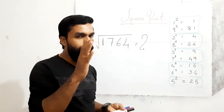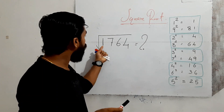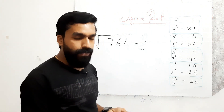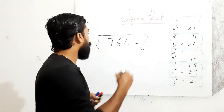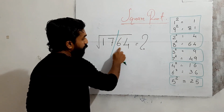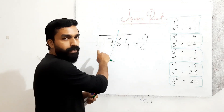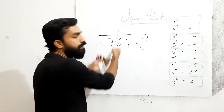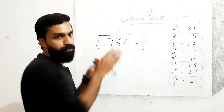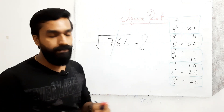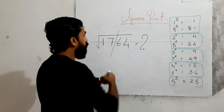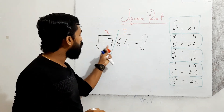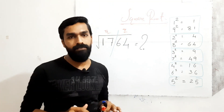We can start with the first question: find the square root of 1764. First step — make the groups. The last two digits (unit place and tens place) form the first group, and the remaining digits form the second group. So for 1764: '64' is the first group and '17' is the second group.